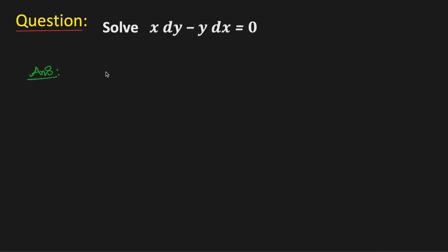In this video, we will solve the differential equation x dy minus y dx is equal to 0. Now to solve this, we will divide both sides by x squared.